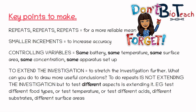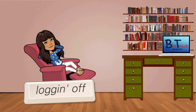The last part of the question, always worth four marks, is about the extension of the investigation. The term 'extend' means to stretch the investigation further — what can you do to draw more useful conclusions? Doing repeats alone is not necessarily extending the investigation, but doing repeats to test different aspects is. For example, testing different food types, testing temperature if you tested surface area before, testing different acids if you tested hydrochloric acid, or testing different substrates or surface areas. Think about what your experiment is about and what you could change to draw more useful conclusions.